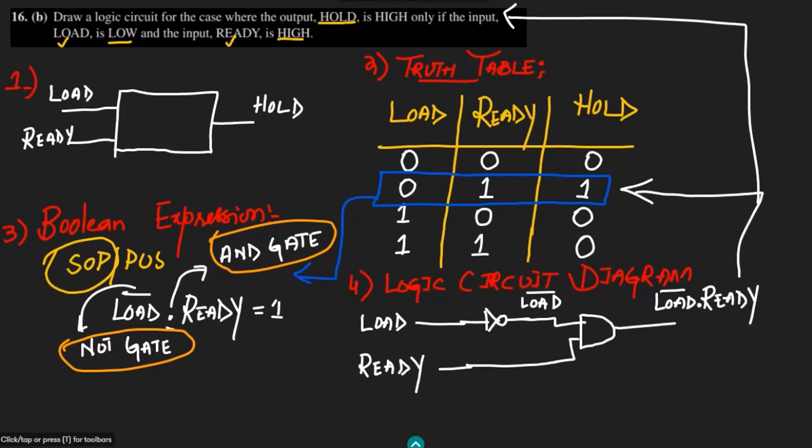By writing conditions in the form of a truth table, you can derive the boolean expression, and from the boolean expression you can design any logic circuit. We will move towards more complex circuits in upcoming videos. Please practice and write in the comment box if you encounter any difficulty. Take care and see you soon.